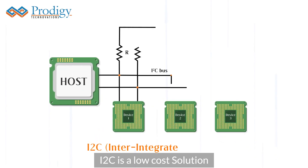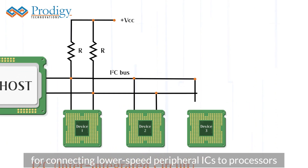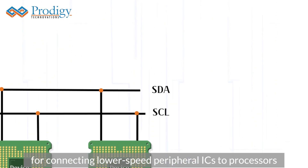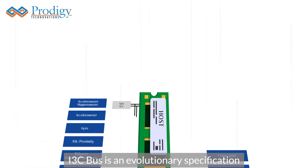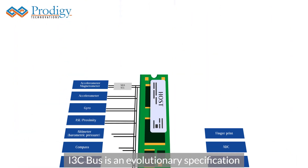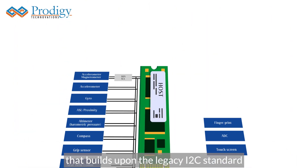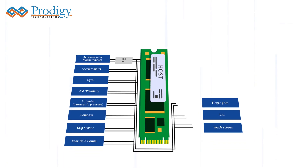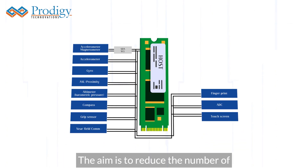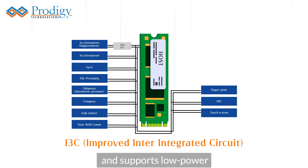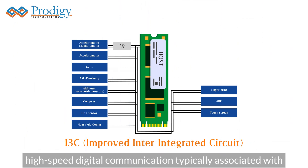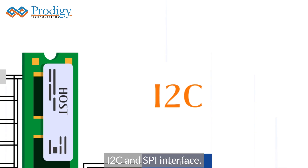I2C is a low-cost solution for connecting lower-speed peripheral ICs to processors and microcontrollers. I3C bus is an evolutionary specification that builds upon the legacy I2C standard, aiming to reduce the number of physical pins used in sensor system integration and supporting low-power, high-speed digital communication typically associated with I2C and SPI interfaces.